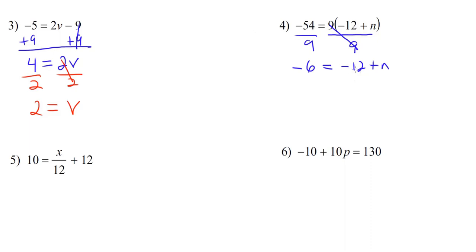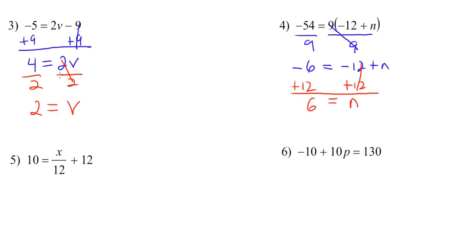Now all we have to do is get rid of this negative 12, so we're going to add 12 to both sides. On the right, the 12s cancel out, leaving us with n. And on the left, negative 6 plus 12 — different signs subtract, keep the sign of the bigger number — and the answer is positive 6.